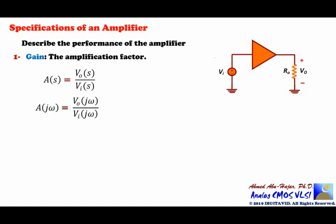This frequency response tells us how the gain varies as a function of frequency ω, where ω is in radians per second. The frequency response is a complex function, meaning it has a magnitude and a phase. We break it into two components: the magnitude |A(jω)| and the phase of A(jω). To fully describe the gain as a function of frequency, we need two plots — one for the magnitude and one for the phase as a function of frequency.